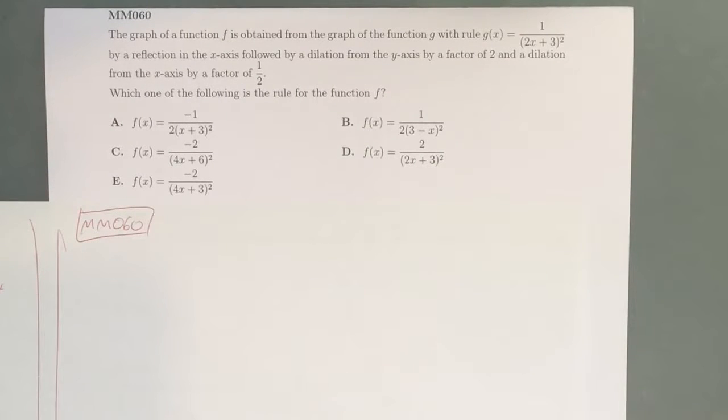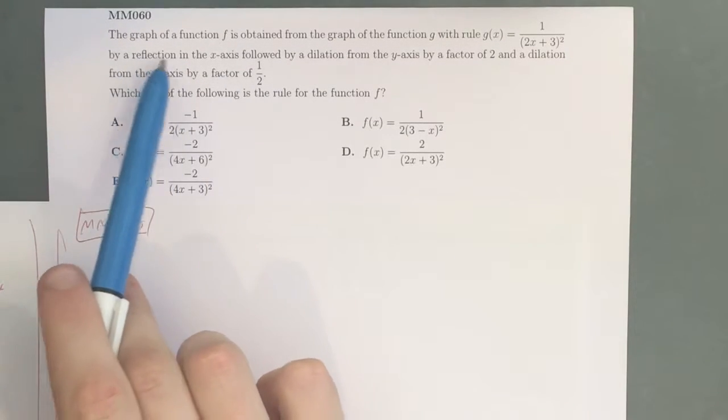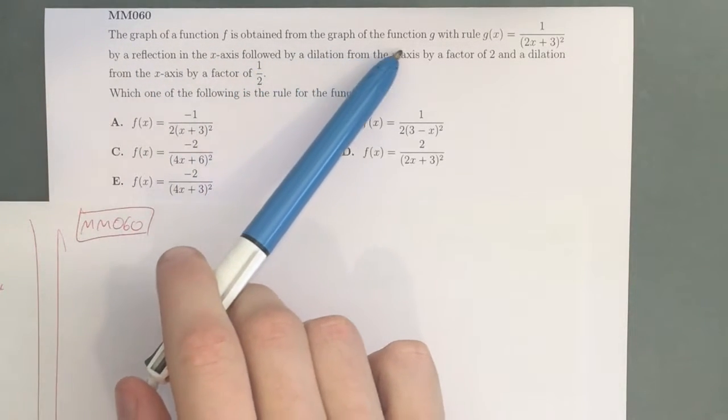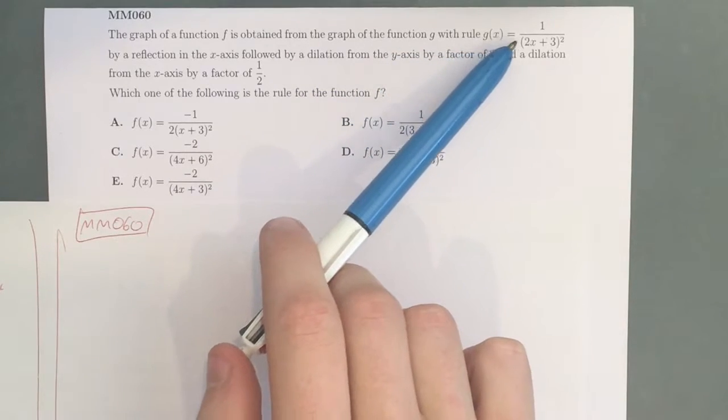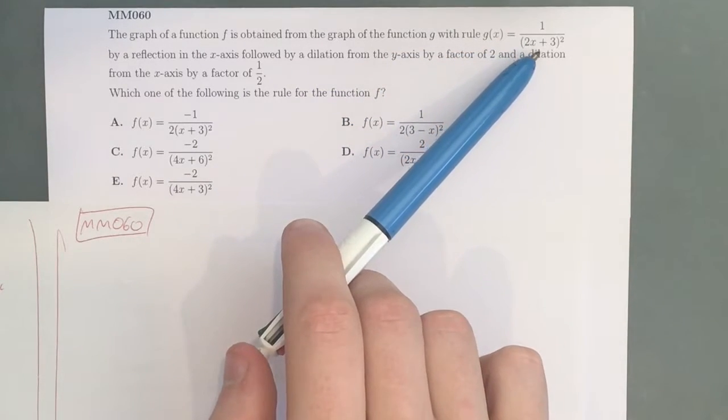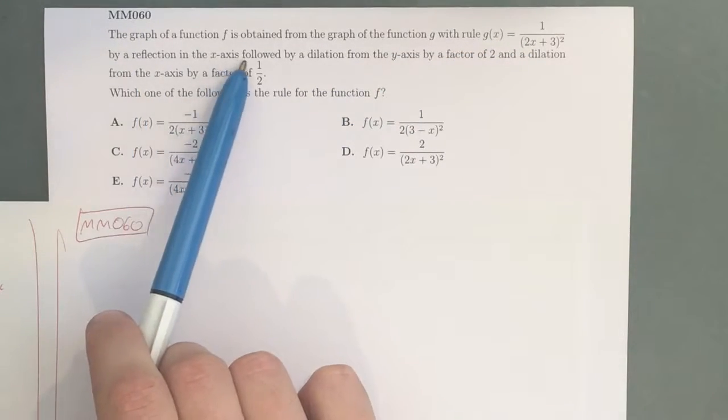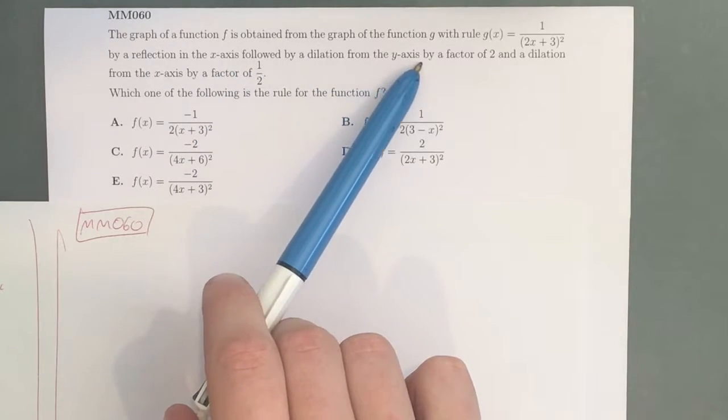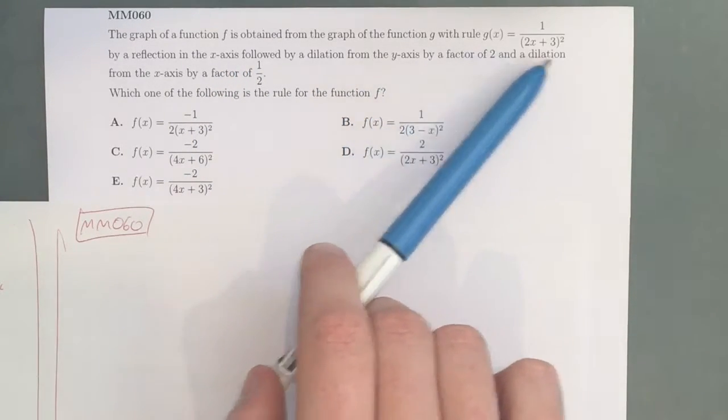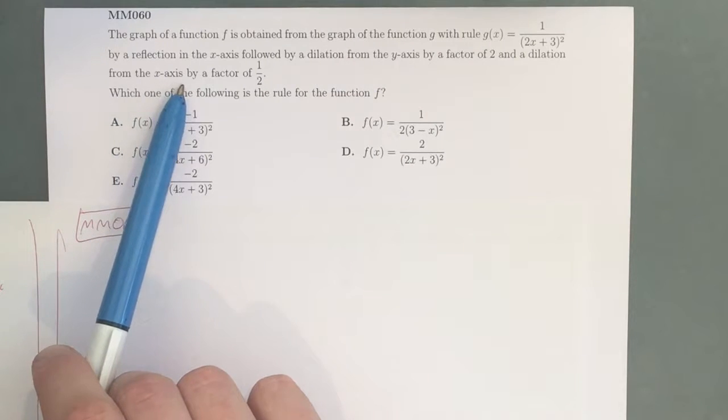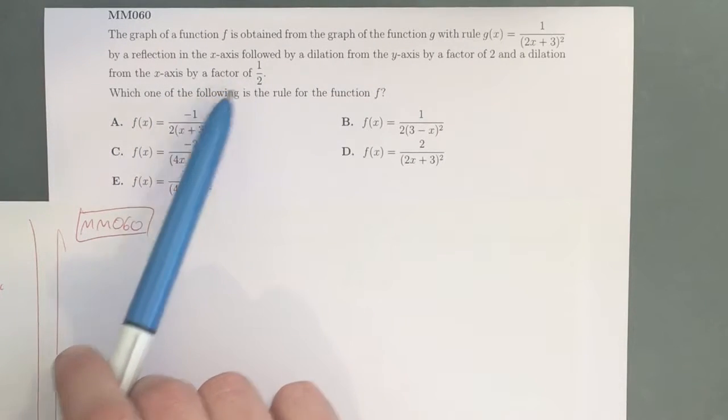Hey guys, this is question MM060 of the Maths Methods Sharpen Study Guide. Looks like a long one. The graph of a function f is obtained from the graph of the function g with rule g(x) = 1/(2x+3)² by reflection in the x-axis followed by dilation from the y-axis by a factor of 2 and a dilation from the x-axis by a factor of 1/2.